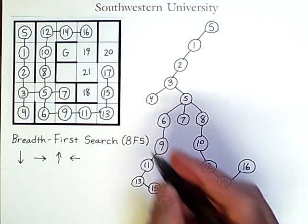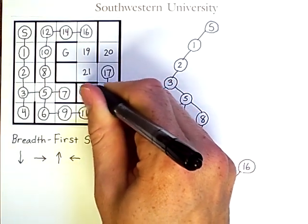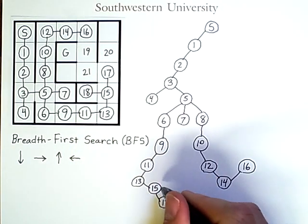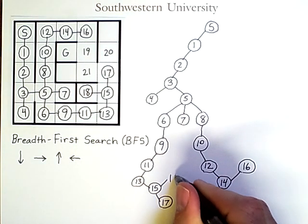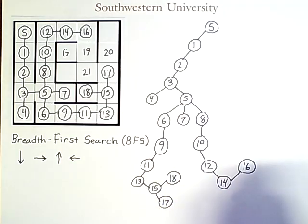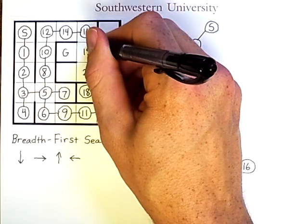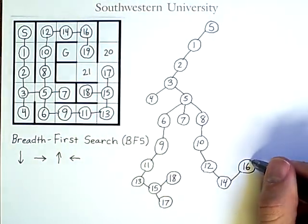And now, I check node eighteen, which is also reachable from fifteen, and then I go to nineteen, from sixteen.